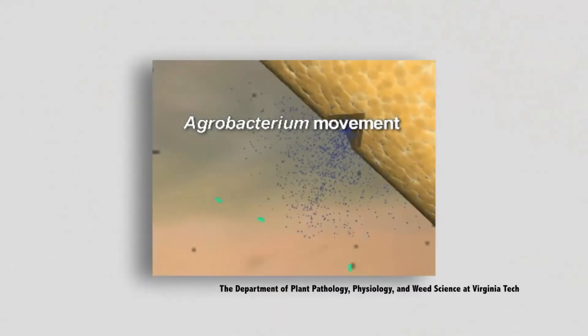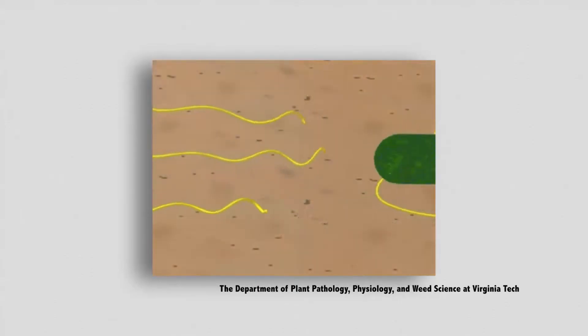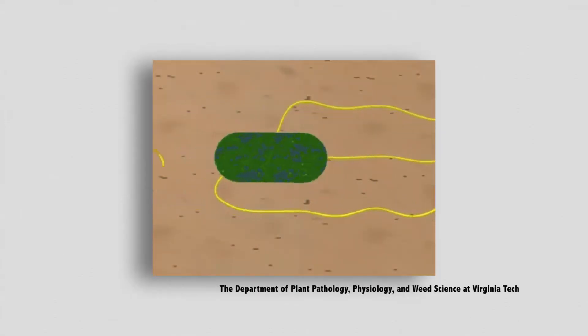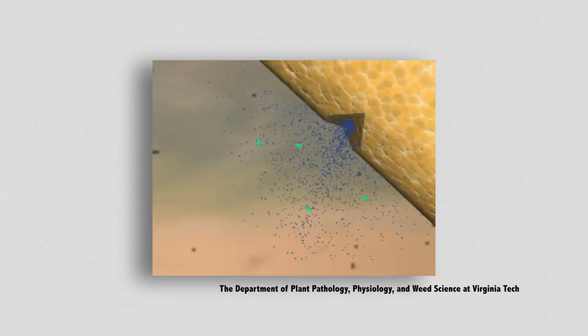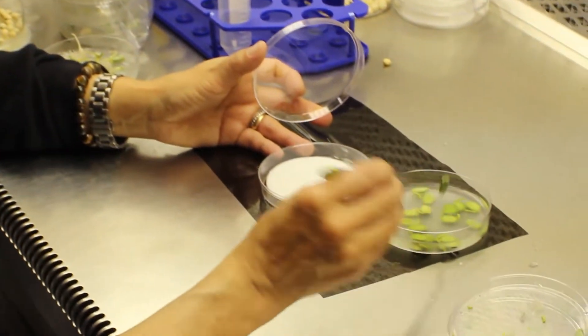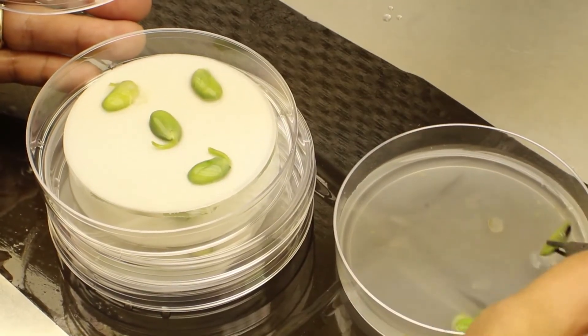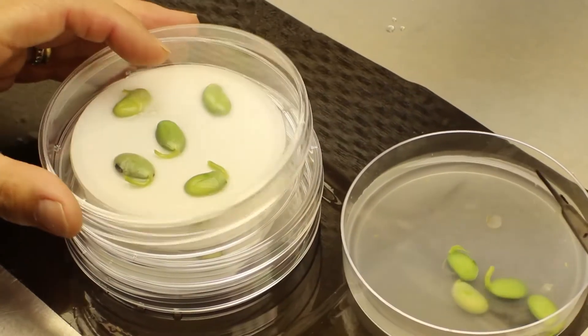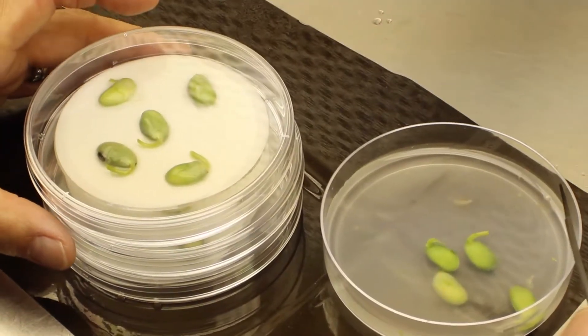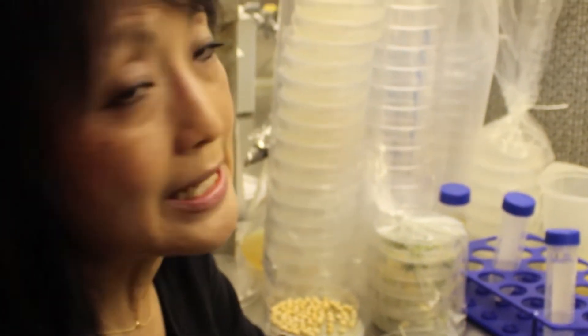The bacteria has started to attach to the cotyledons. The agrobacteria is attracted by compounds generated from wounded plant cells. We move the cotyledons wounded side down in contact with the filter paper, which contains the co-culture media.